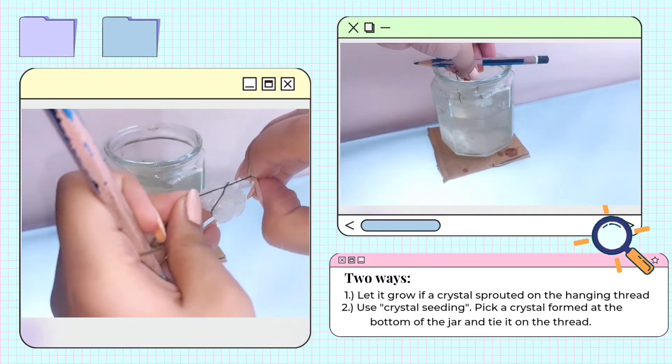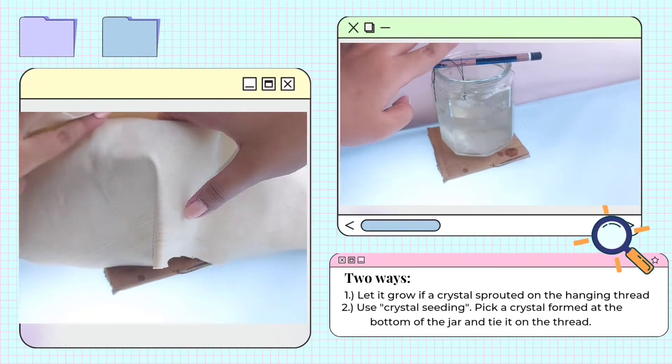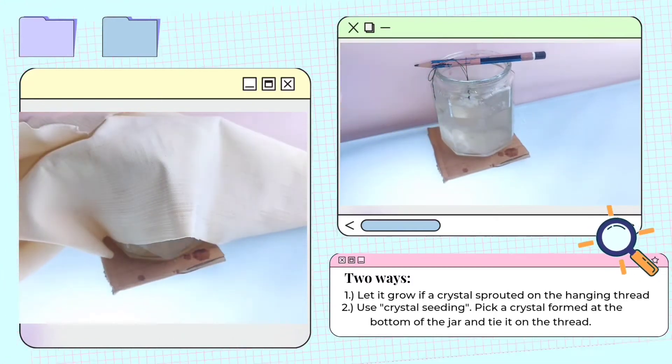Tie a fine thread to the seed crystal. You will hang the seed crystal into the jar far enough so that it will be covered in liquid but won't touch the bottom or sides of the jar.